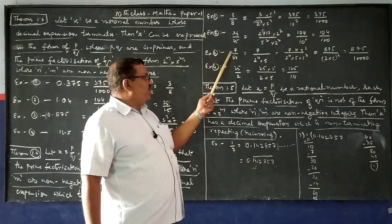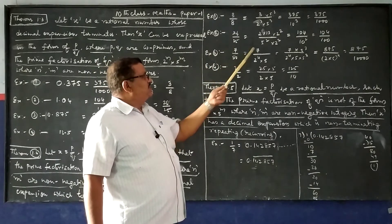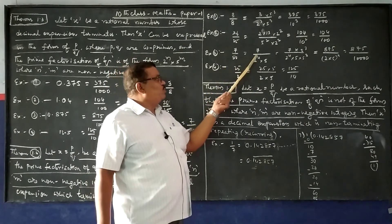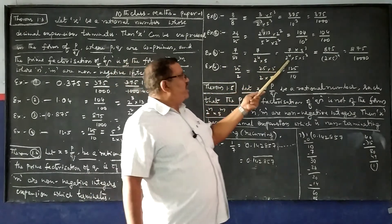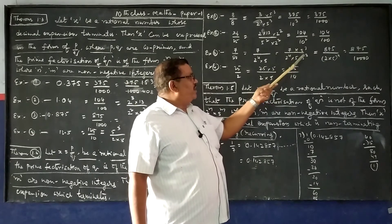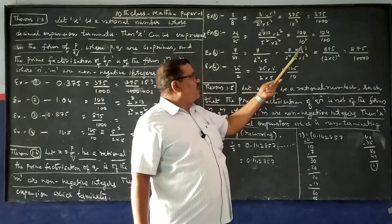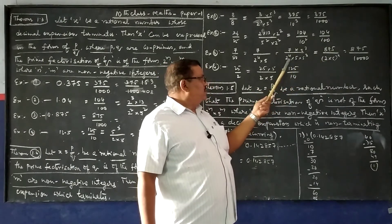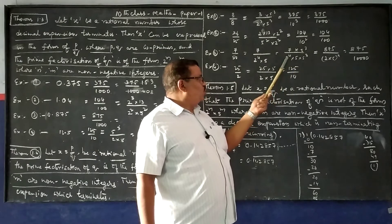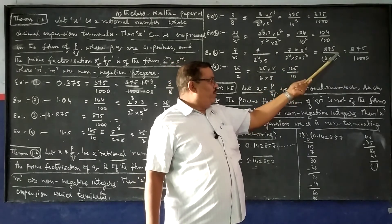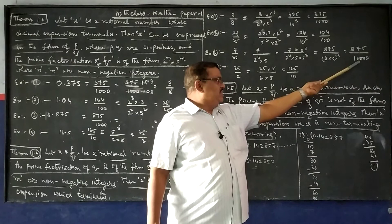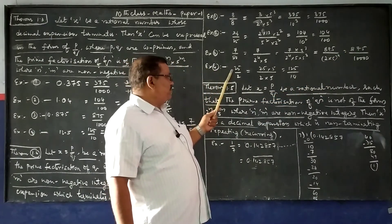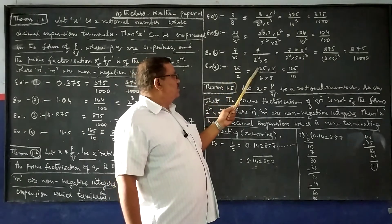Again, example 3: 7 by 80, which can be written as 7 by (2⁴ × 5). Multiply numerator and denominator by 5³. We get 5³ = 125, so 125 × 7 = 875. The denominator becomes 5⁴ × 2⁴ = (2 × 5)⁴ = 10⁴ = 10,000. So 875 by 10,000. Example 4: 25 by 2 — multiply denominator and numerator by 5 to get 125 by 10.